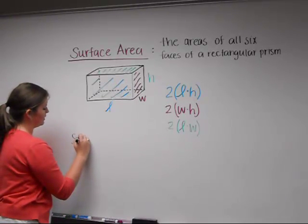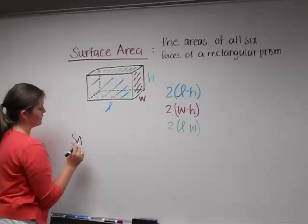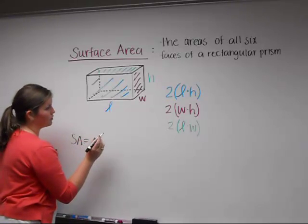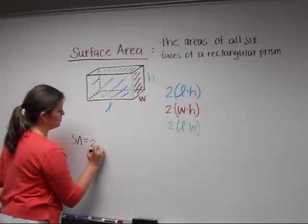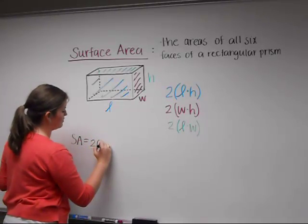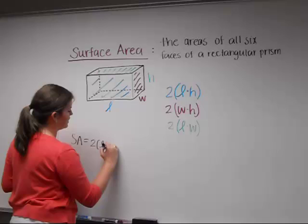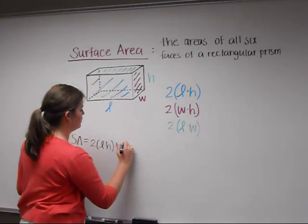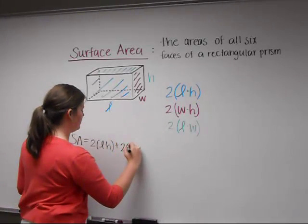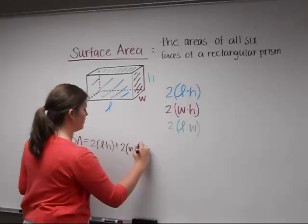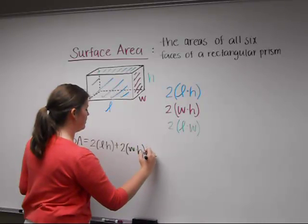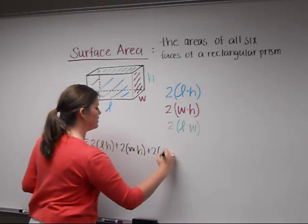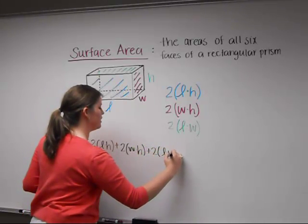So the surface area, which we're going to represent by SA, equals two times the length times the height, plus two times the width times the height, plus two times the length times the width.